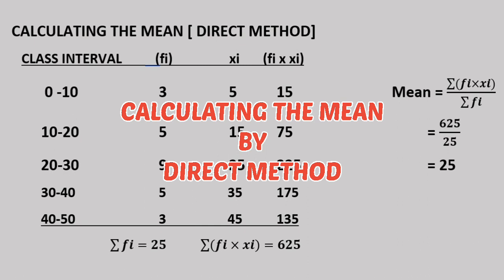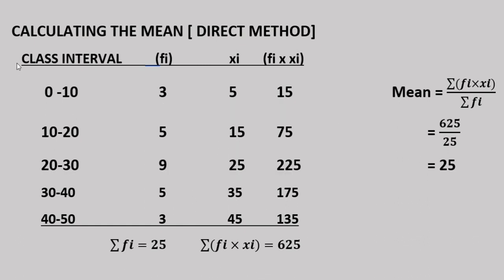Welcome to this video. Calculating the Mean by Direct Method. The class interval is 0 to 10 up to 40 to 50, with frequencies 3, 5, 9, 5, 3. The mean by direct method formula is here.